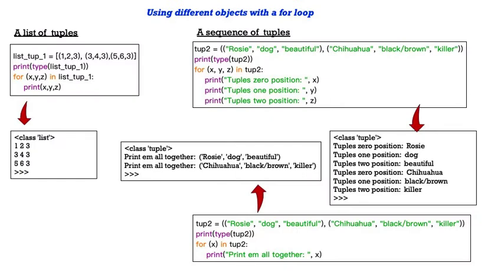Let's see what special considerations there are for using a for loop with various different objects in Python. In the upper left-hand corner, we have a list of tuples, list underscore tup underscore 1. We print the type to satisfy curiosity, to say that it is indeed a list with three tuples inside. So we use for XYZ. Now we have three iterators in list underscore tup underscore 1, and you see what gets printed out are those three different sets of three numbers, 1, 2, 3, 3, 4, 3, and 5, 6, 3. We would be able to manipulate those individual characters or those individual elements within the tuple if we wanted to.